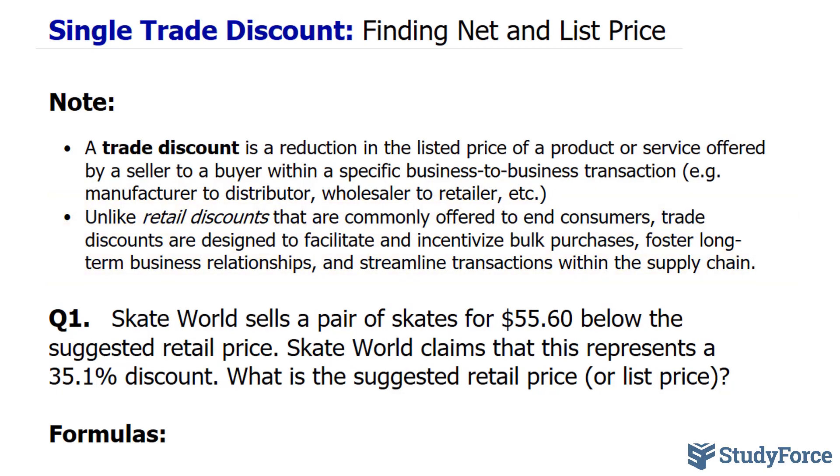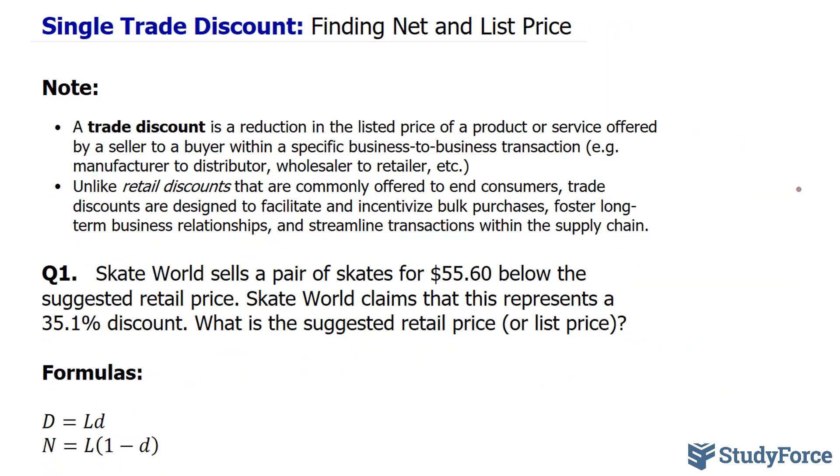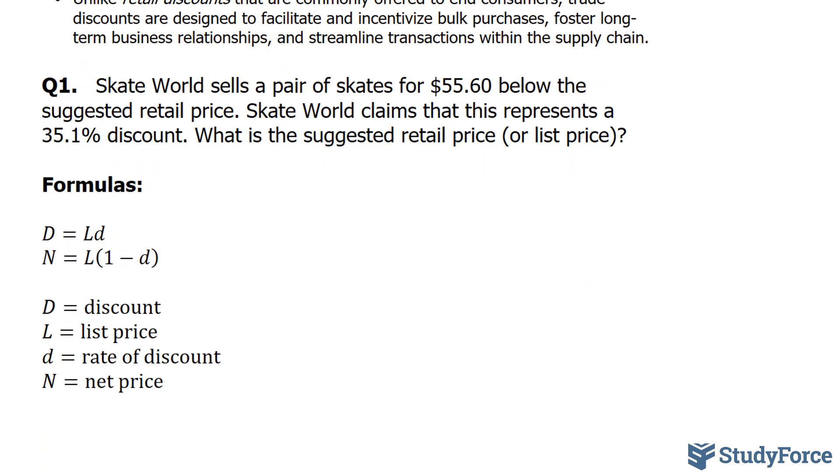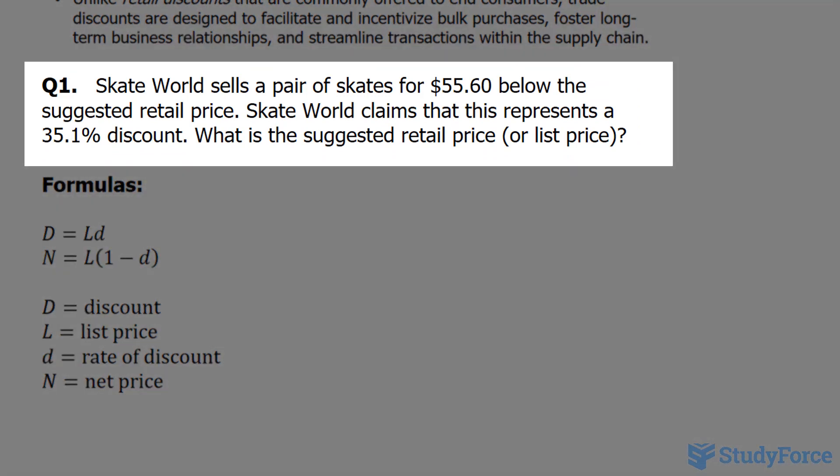Now, because we're dealing with single trade discounts here, how we calculate retail discounts is really no different since we're only dealing with a single discount. Nevertheless, let's take a look at example one. The question reads, SkateWorld sells a pair of skates for $55.60 below the suggested retail price. SkateWorld claims that this represents a 35.1% discount. What is the suggested retail price or list price?